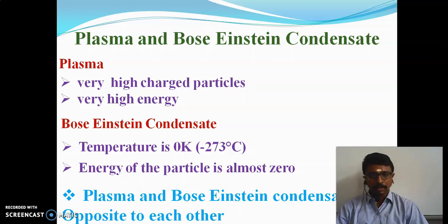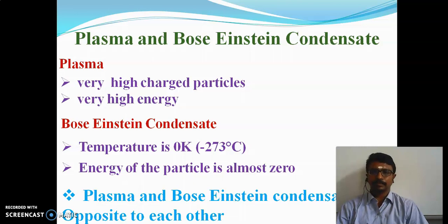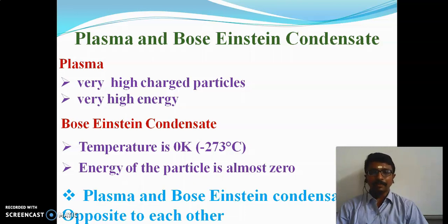Plasma has very highly charged particles with very high energy. But in Bose-Einstein condensate, the temperature is 0 Kelvin, which is minus 273 degrees Celsius, and the energy is almost zero — very low energy. So plasma and Bose-Einstein condensate are opposite to each other; their properties are not similar but opposite.